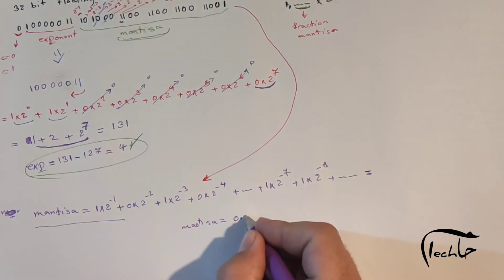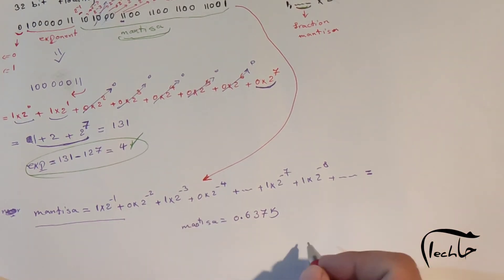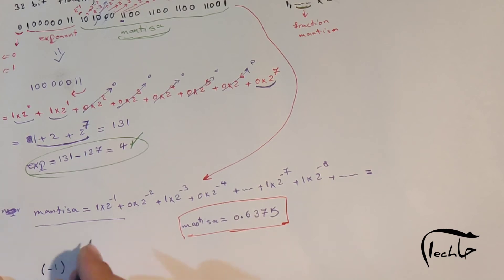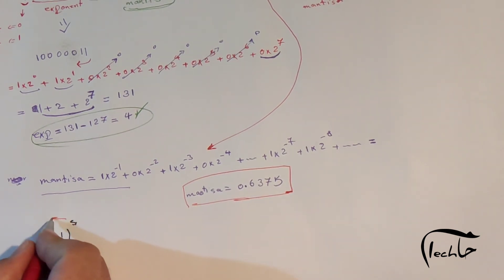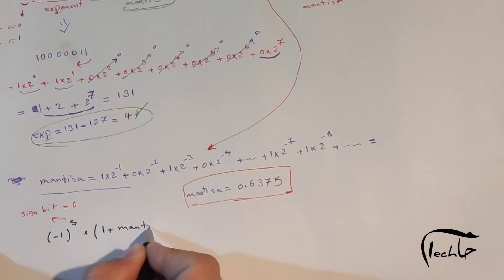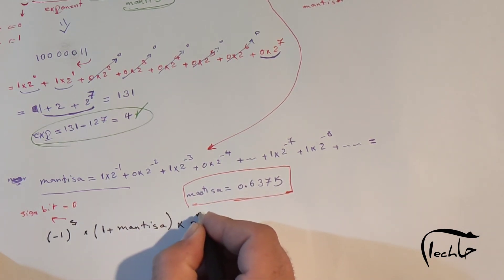Now to find the decimal equivalent, I'm going to use the general form: negative 1 to the power s (s is the sign bit, which equals 0) times (1 plus mantissa) times 2 to the power exponent.